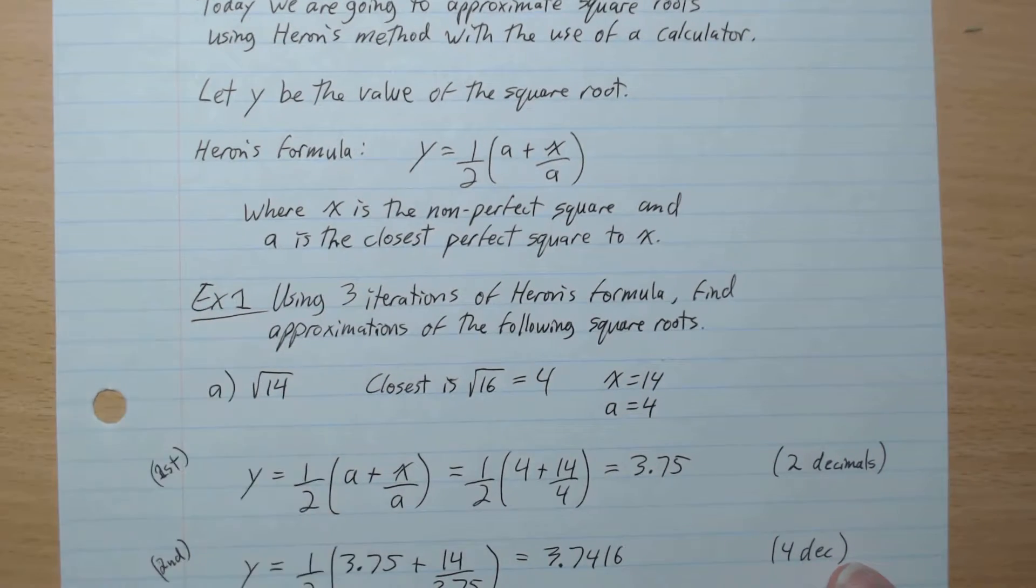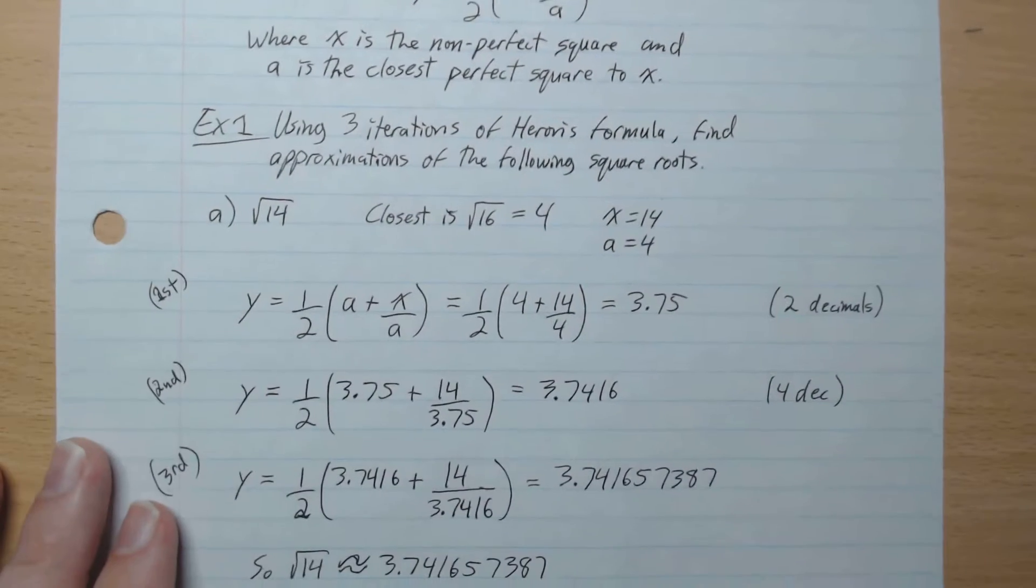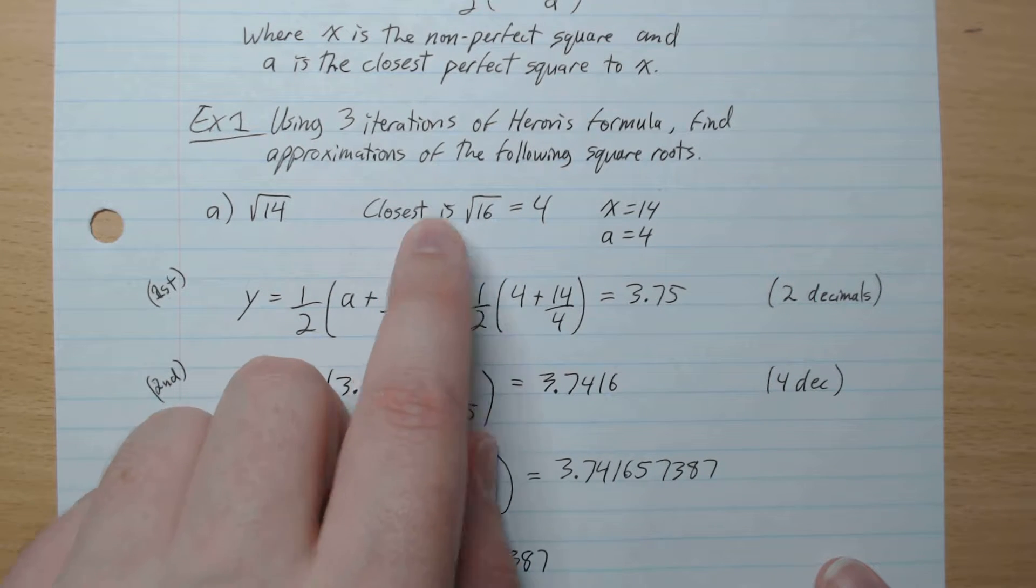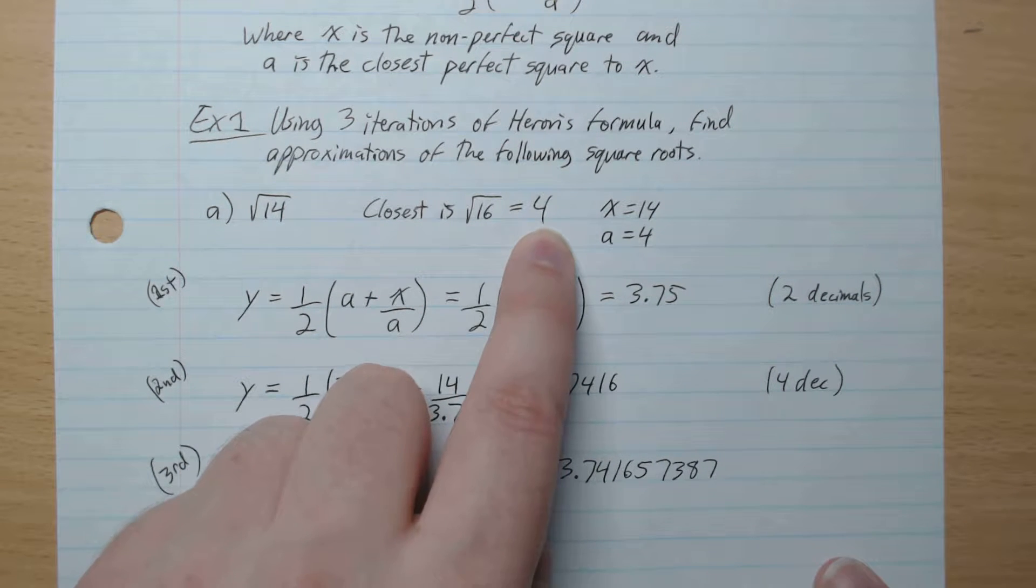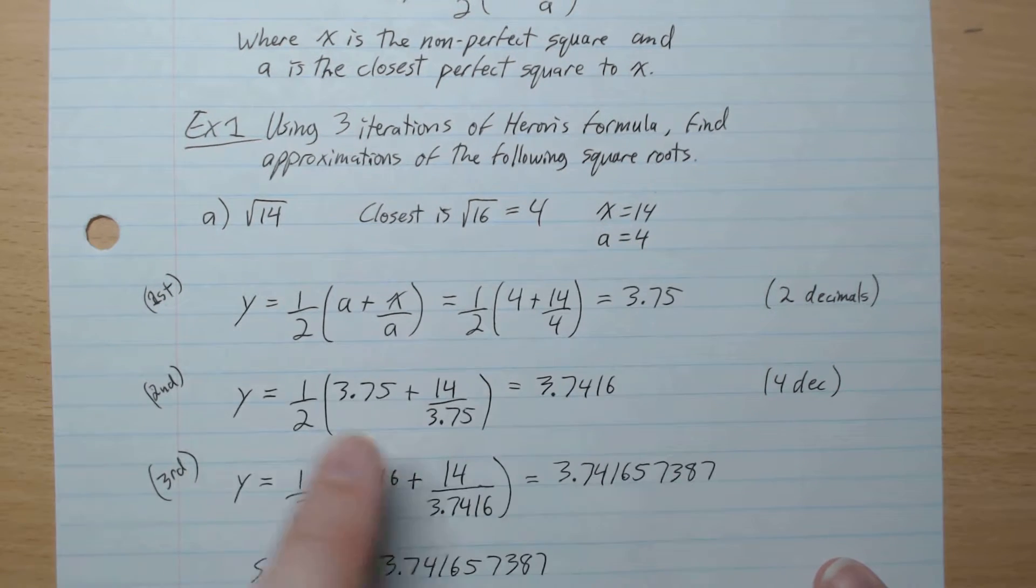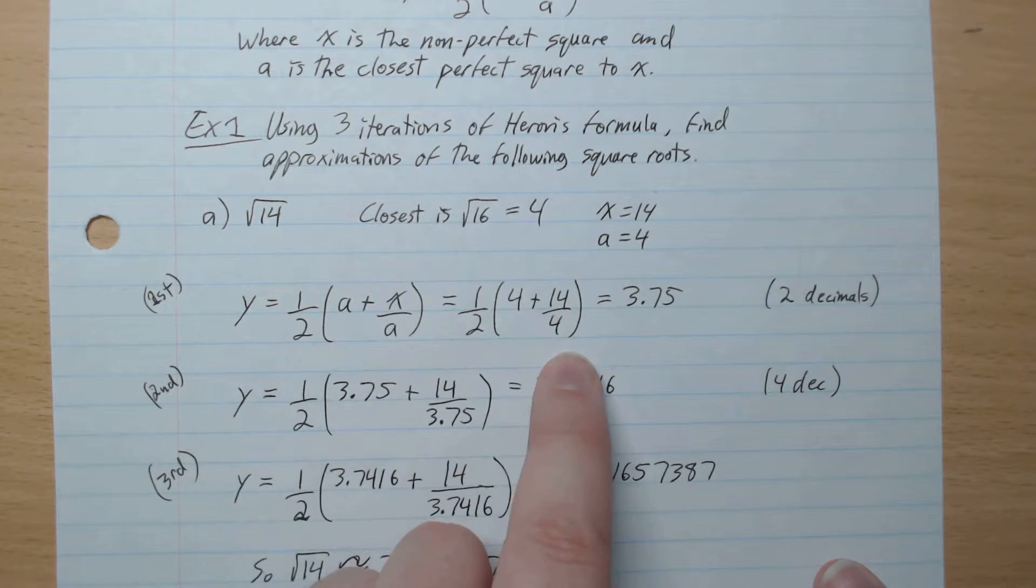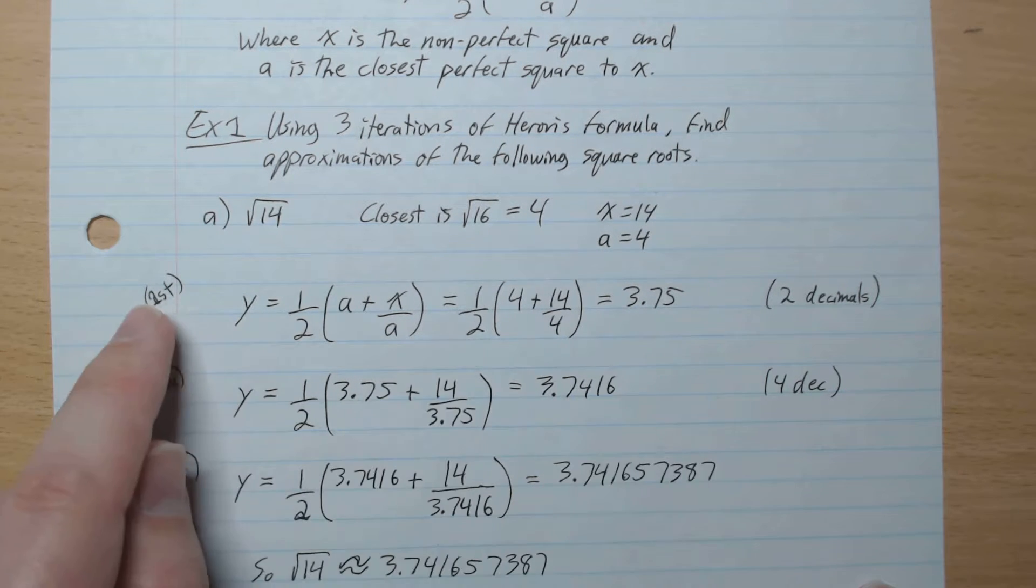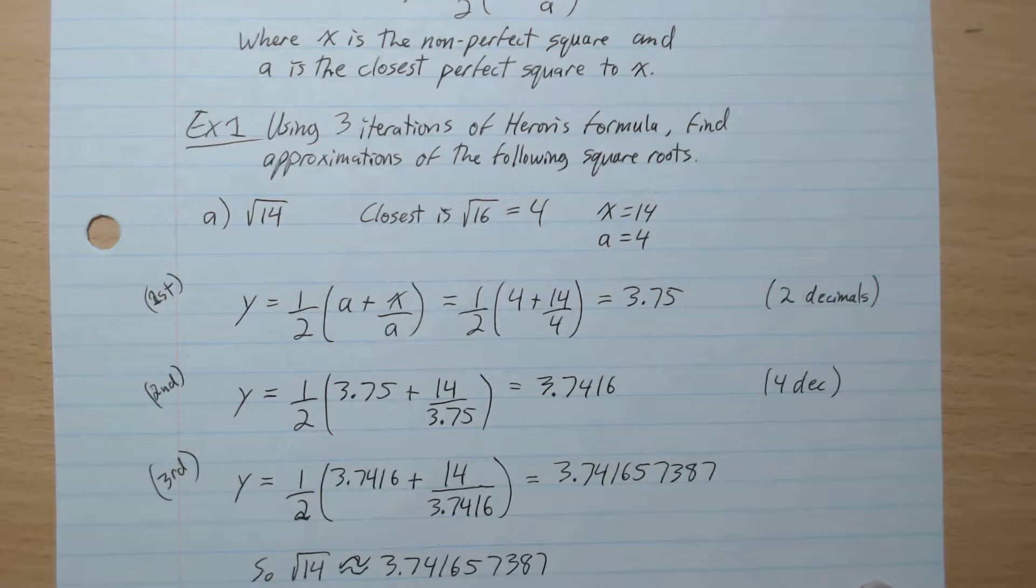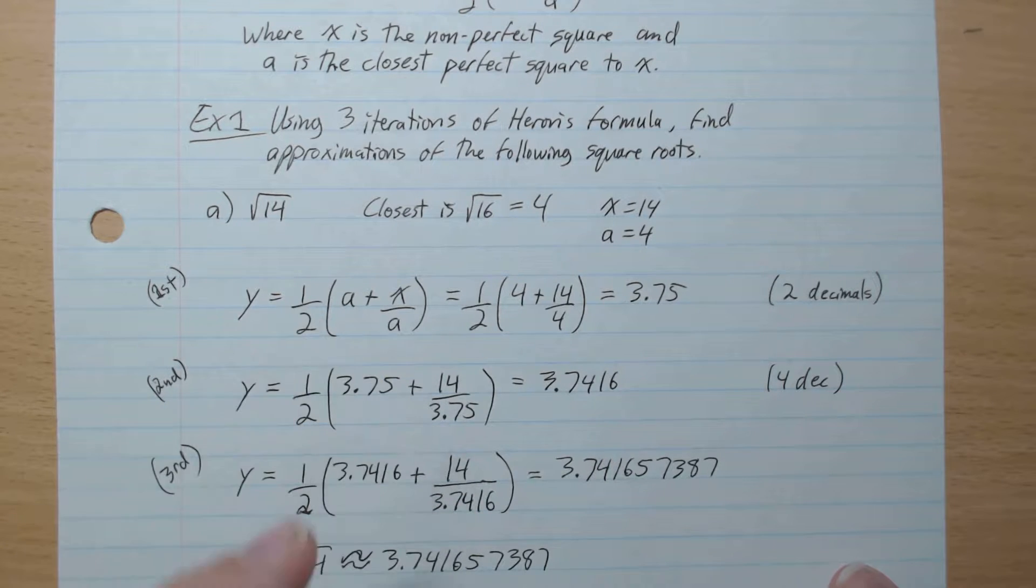Let's do some examples. Example 1: Using 3 iterations of Heron's formula, find approximations of the following square roots. Square root 14. So the closest is root 16 which is 4, and so our x is 14 and our a is 4. And so y equals half a plus x over a. So half, plug in a, 4 and 4, plug in x, 14, and this gives 3.75. So on the first iteration, we want to have two decimals.